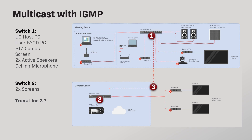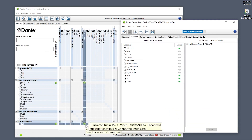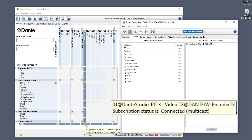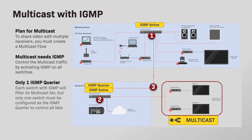What if we want to send the same image to both screens on switch 2? Is there a way to split signals with Dante AV? If your system requires splits of the same signal going to multiple destinations, you must plan for multicast. Multicast will consume just one flow of your device and can be sent to as many destinations as are subscribed to that multicast flow as members of a group. When multicasting Dante audio or video, make sure to engage IGMP on all switches and choose one of them to be the IGMP querier. Each switch will filter their local IGMP lists, but only one switch in the whole network must be configured to control all lists as the IGMP querier.